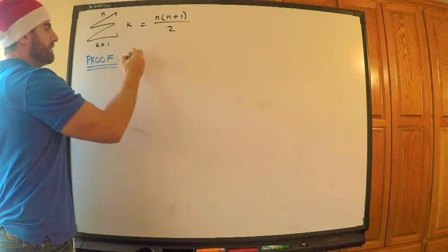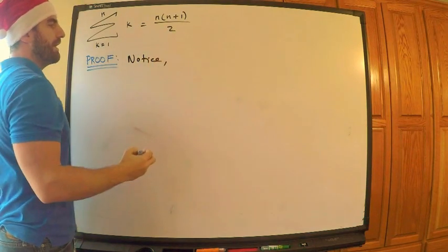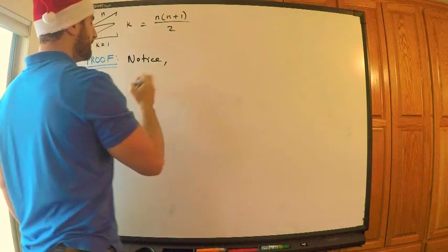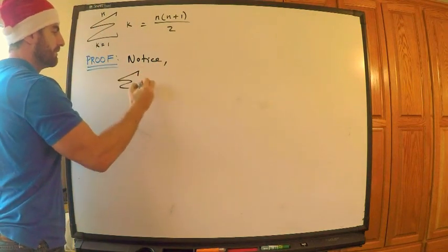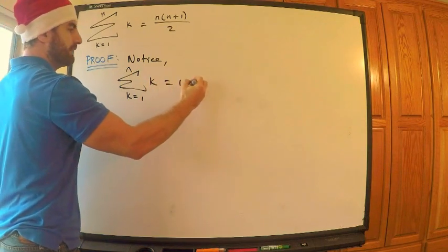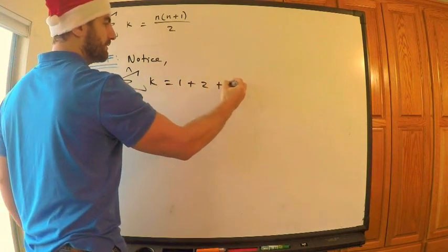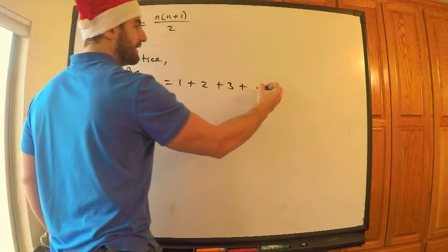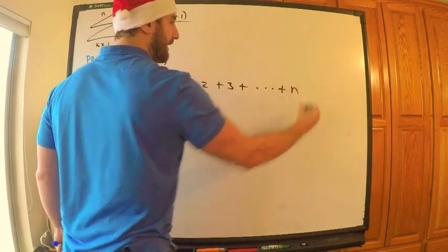All right, so first, notice that the sum, this sum from k equals 1 to n of k is equal to 1 plus 2 plus 3 plus dot dot dot, all the way up to n.